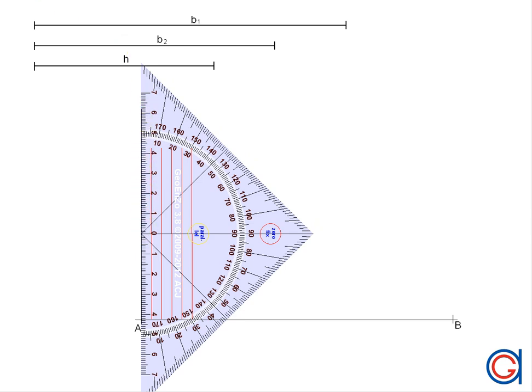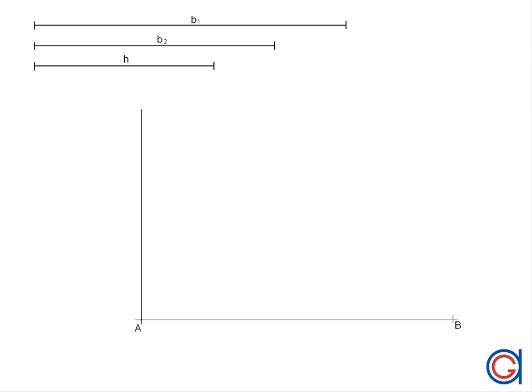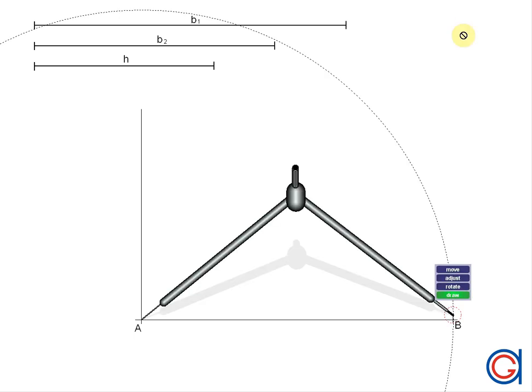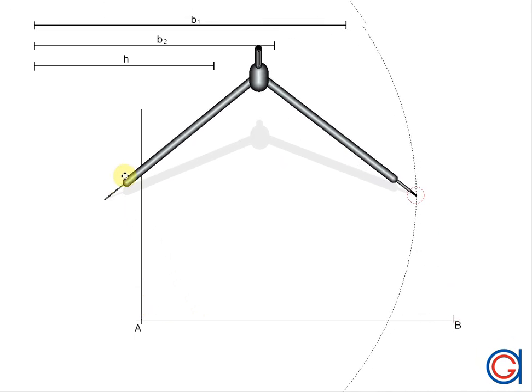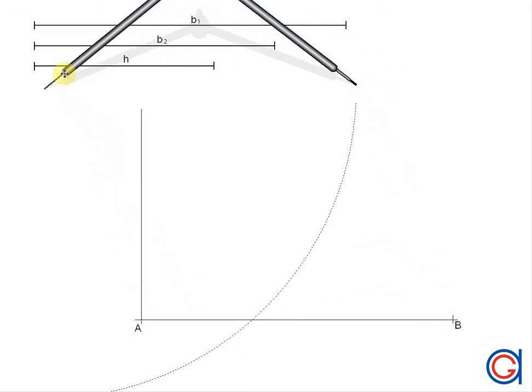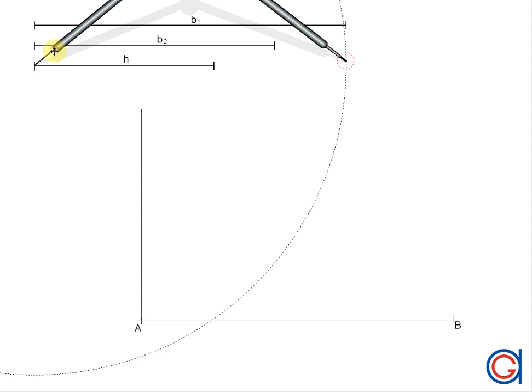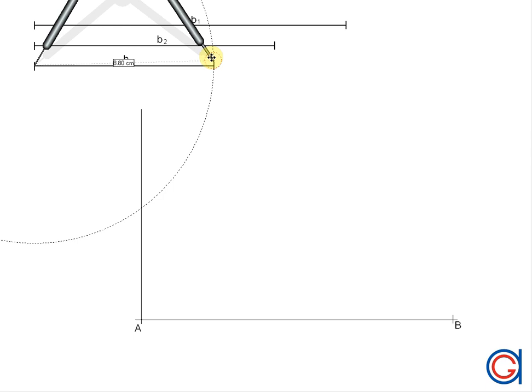The next step is setting our compass to the length of the given height. We are going to transport this height onto the vertical line that we've just drawn. Setting our compass to the length of the height and setting our compass on point A, we scribe an arc until it cuts the vertical line.